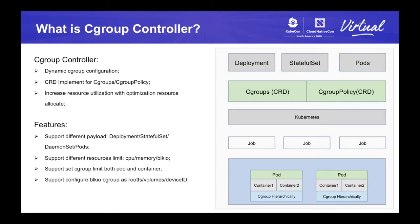The cgroup controller is developed just for this purpose. From the perspective of function, with the cgroup controller we can dynamically configure cgroup limitations — we create a Kubernetes resource and do not need to care about the pod location or running environment. From the perspective of realization, the cgroup controller implements CRDs for cgroups and cgroup policy. With the cgroup CRD, the controller dynamically configures cgroup limitations for target resources and payloads. The cgroup controller also supports configuring different payloads, including deployments, StatefulSets, gaming sets, and pods.